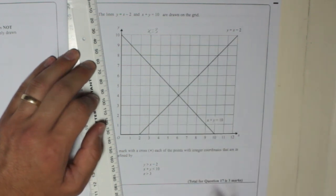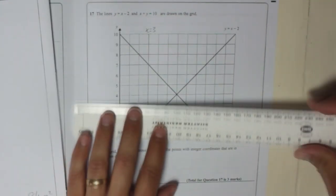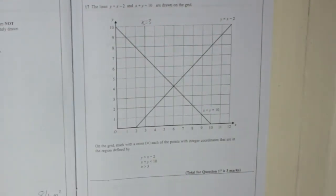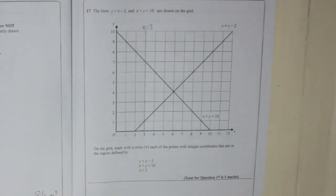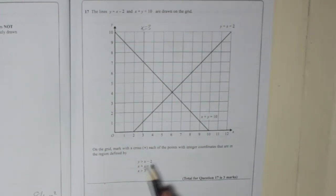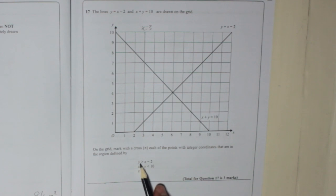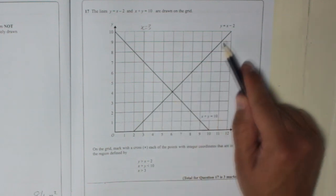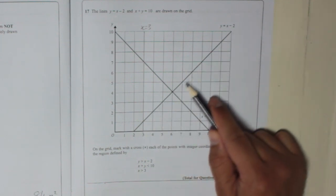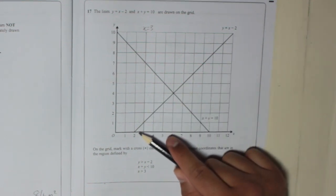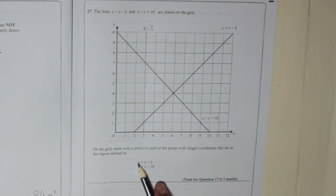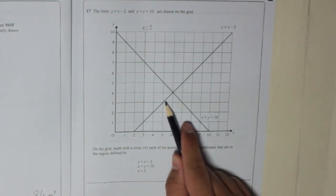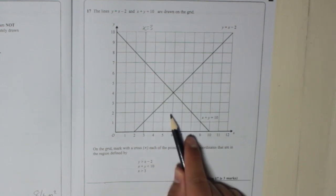For example, if we had a line like y equals 5, it would be a horizontal line where the y coordinate is always 5 no matter where you go — but we don't need that. Now we need to find the area defined by these conditions. Look at the first one: y is greater than x minus 2. Here's the line y equals x minus 2. That area is going to be on one side of the line or the other.